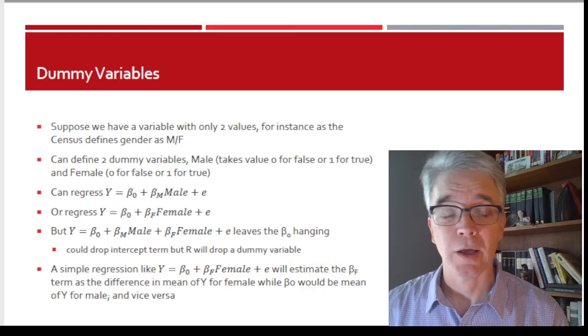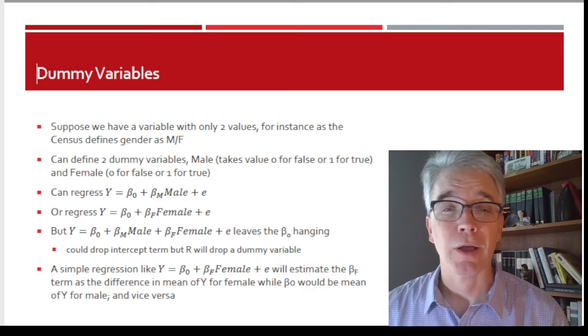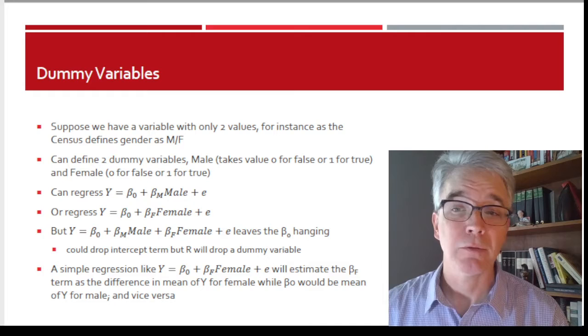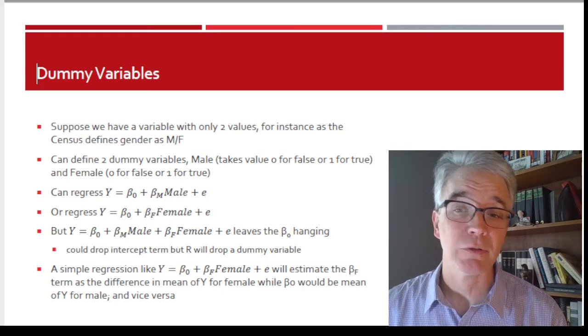Right, because if I have male as the regressor, and Y is function of stuff plus βₘMale, then that's saying, well, how are the Y of males different from the omitted category, which in this case would be the females. So I can say, well, how are males different than the omitted category?